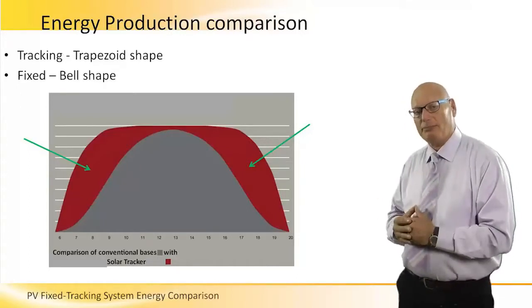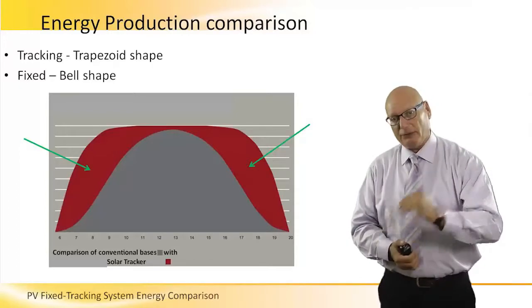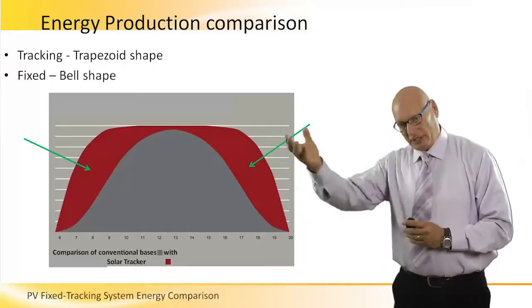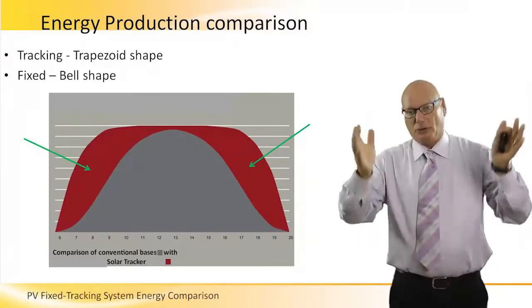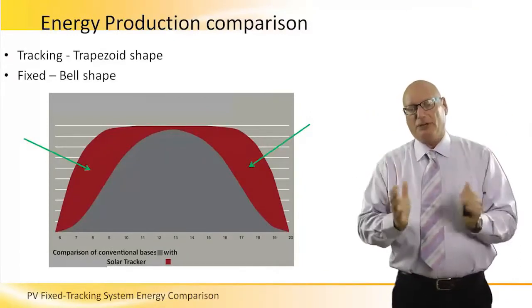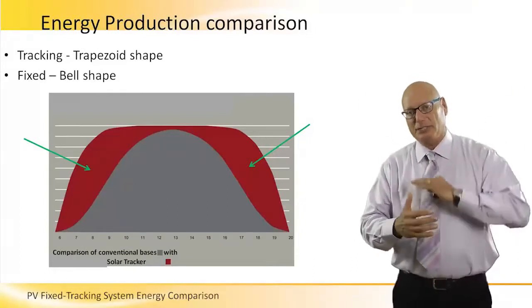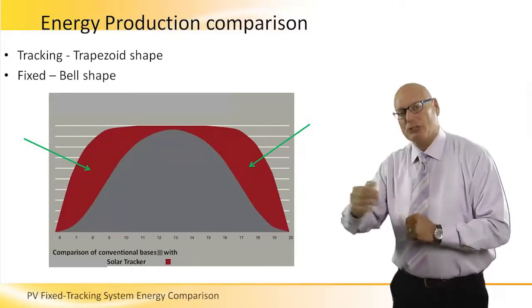The reason that we have the bell shape is because early in the morning the angle is very small, late in the evening the angle of the radiation is very small, noon time or the middle of the day the angle is very high so there's a tremendous amount of radiation and energy being received by the panel. So we create a bell shape.